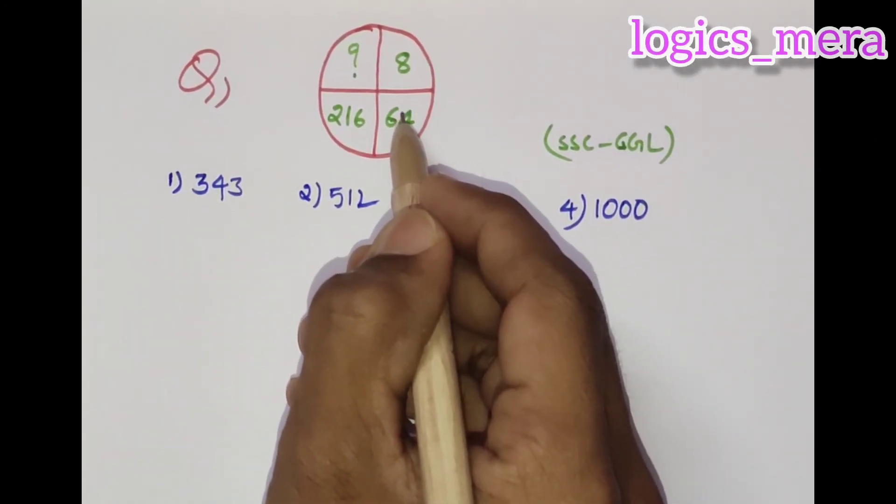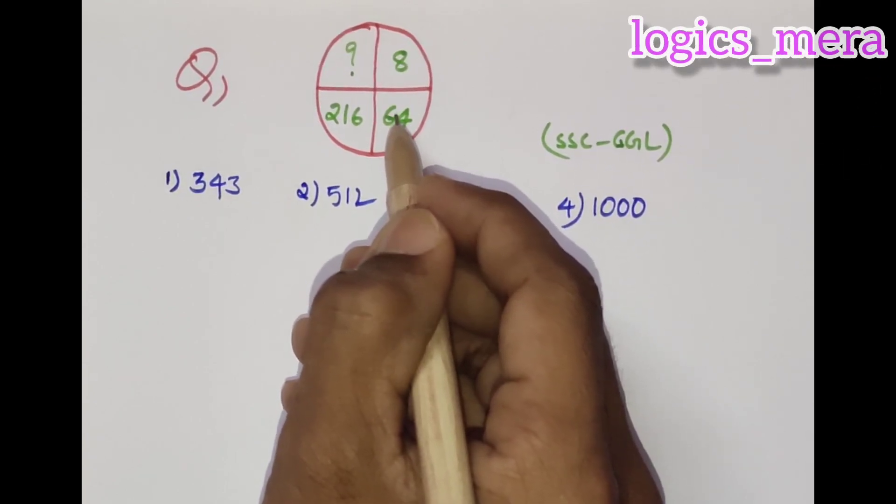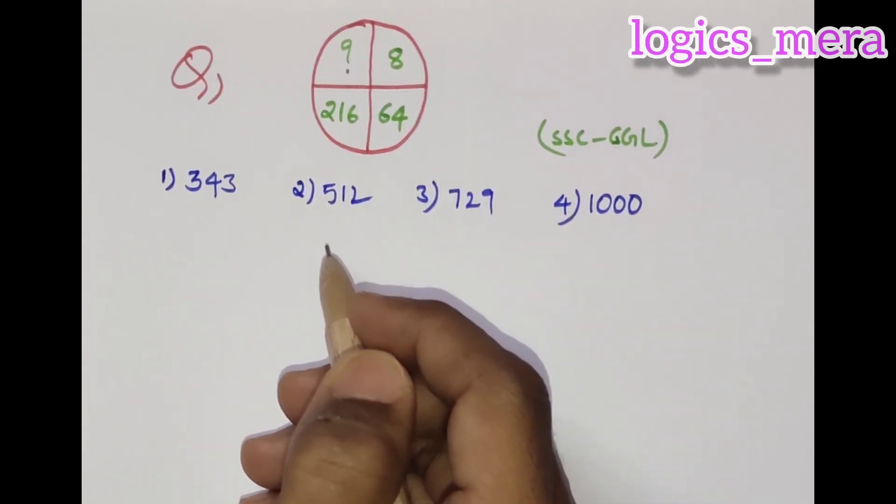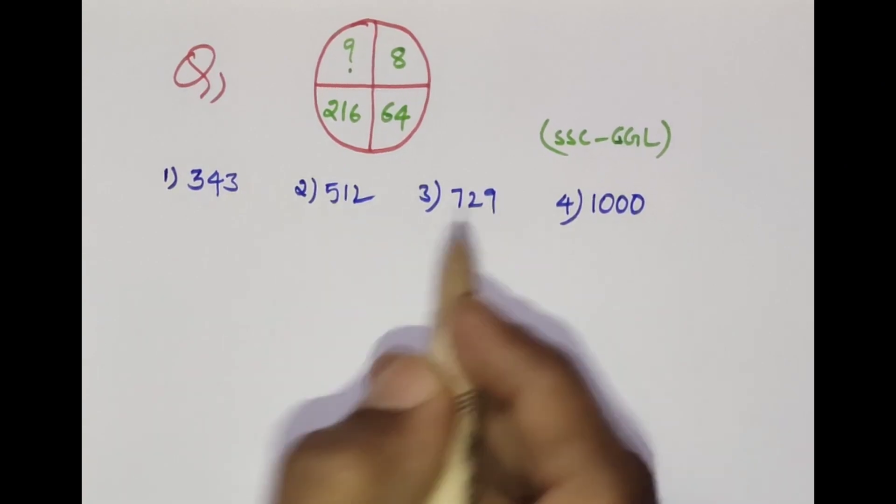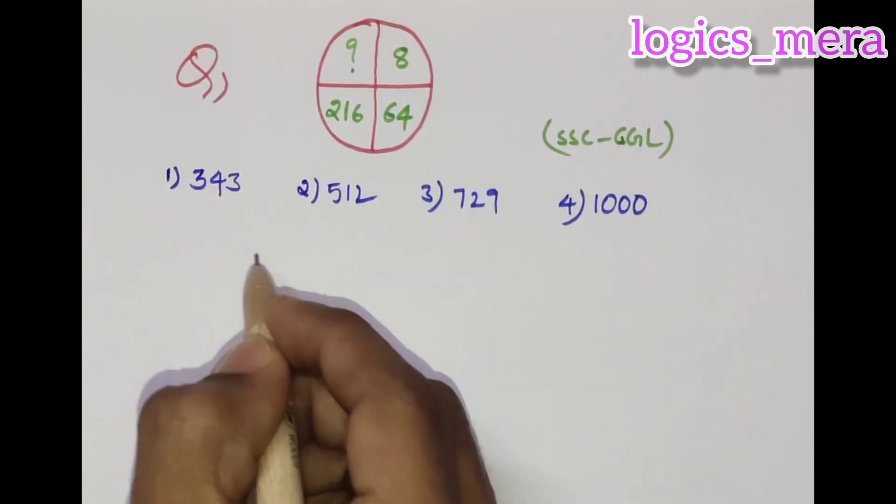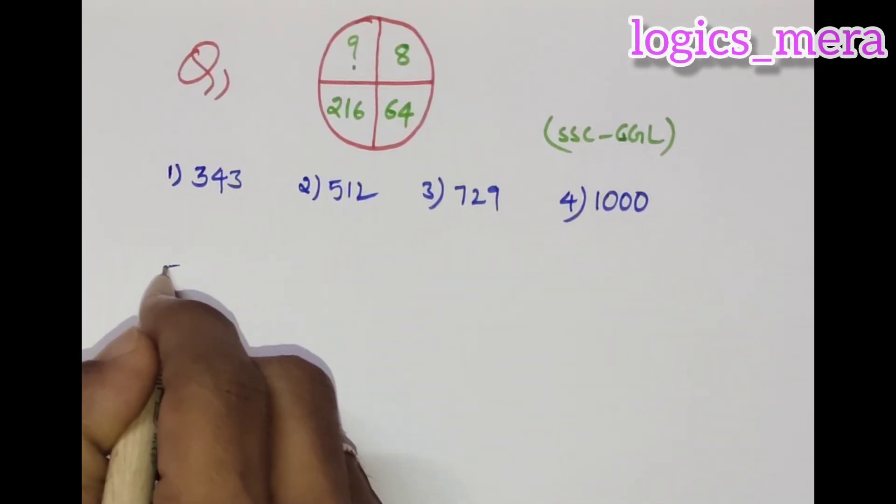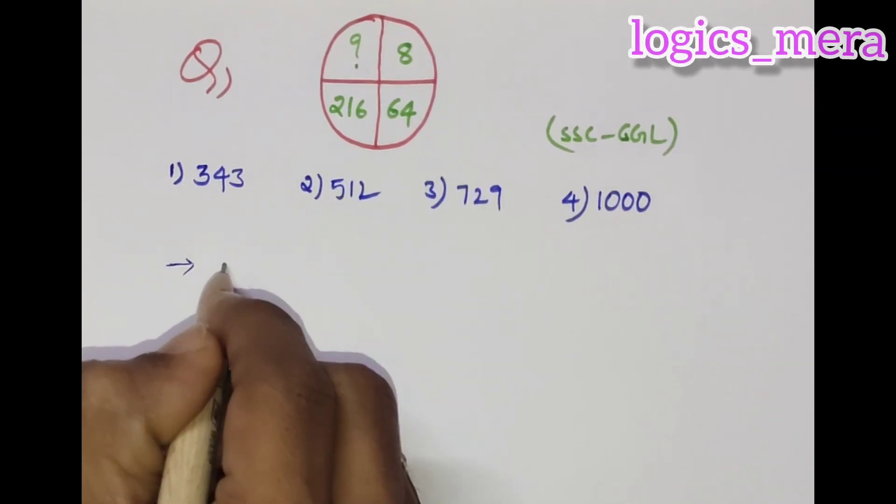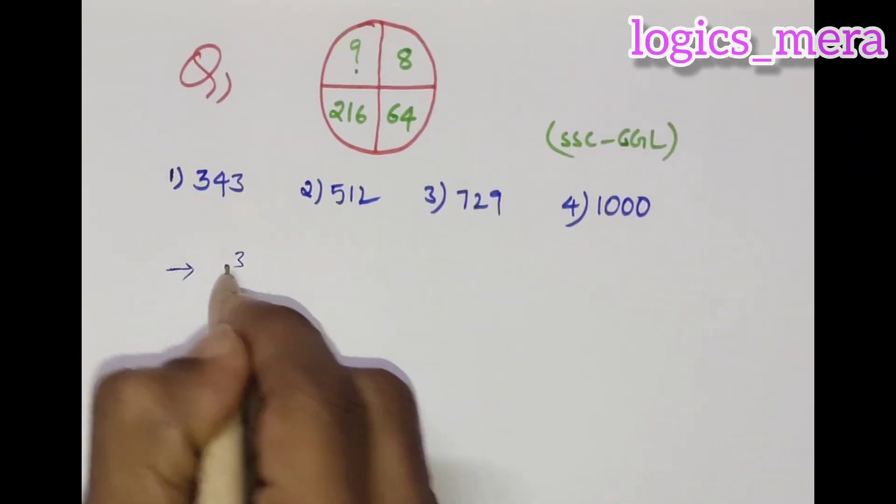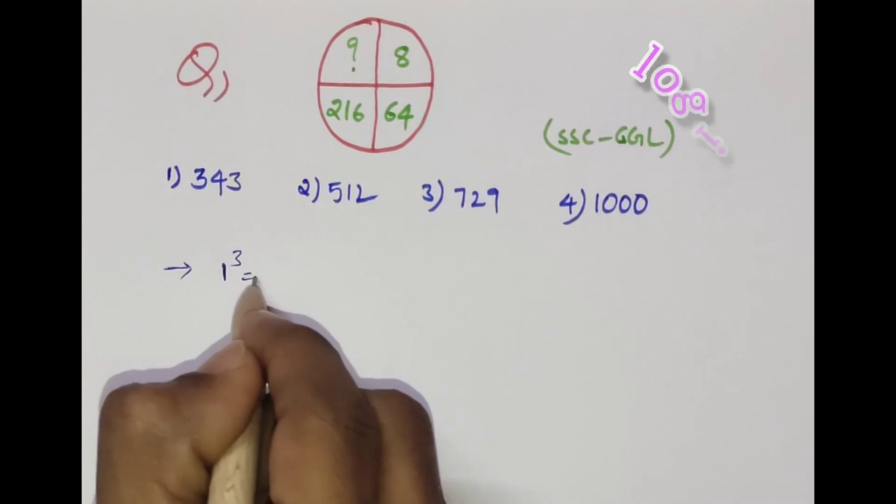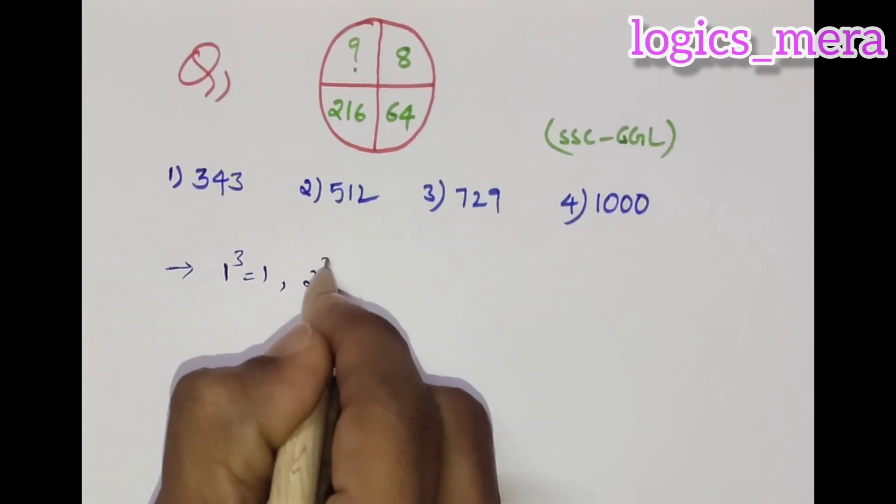For this particular question, if you know the exact squares and cubes of first ten natural numbers, then your answer will be done. For example, if you write the cubes of first ten natural numbers: one cube is one, two cube is eight, three cube is twenty-seven.